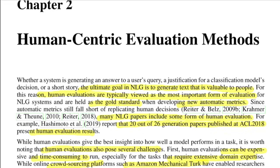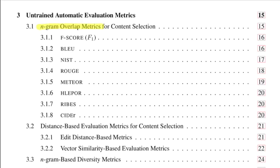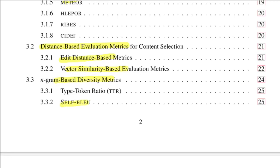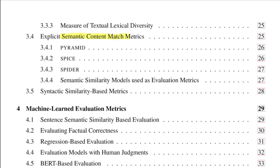That covers the first section of this survey paper on human-centric evaluation. In the next video, I'll talk about automatic evaluation metrics, including n-gram metrics like BLEU, ROUGE, and METEOR; distance-based metrics such as edit distance and vector similarity; diversity metrics like Self-BLEU; semantic content match metrics like Pyramid and SPIDER; and syntactic similarity-based metrics. If you liked this video, hit the like button, subscribe, and share it with friends. See you in the next one!